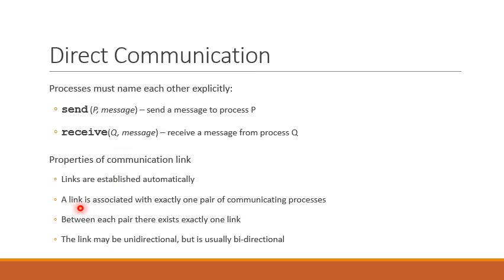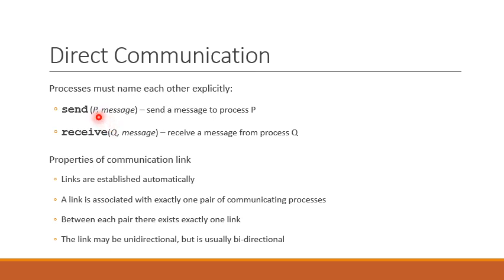Another property is that the communication link is associated with exactly one pair of communicating processes — only P and Q can communicate on this link; other processes cannot. There exists exactly one link between each pair. If another process R wishes to communicate with Q, there will be a separate link between R and Q, and another link between P and Q. So between each pair, there exists exactly one link.